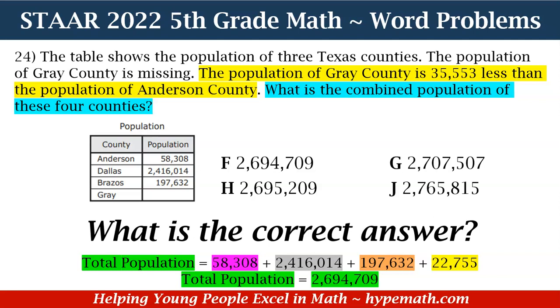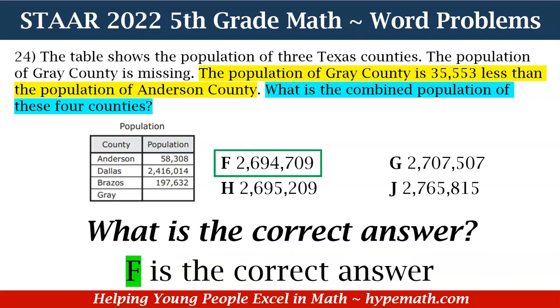That was a lot of work, but definitely worth it. Now that we know the total population is 2,694,709, we look at our answer choices to see which one matches — and yes, it is F. F is our correct answer. Great job, fifth graders!